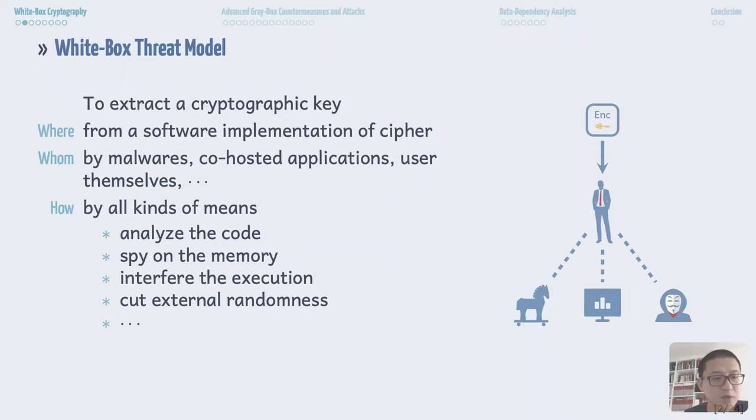The adversary could try all possible means. For instance, she could perform static or dynamic analysis of the code. She could spy on the memory while it's executing the code. She can even modify the code, inject faults, and employ the erroneous execution. So you can easily reset the external randomness.